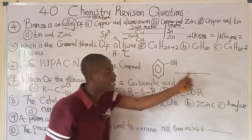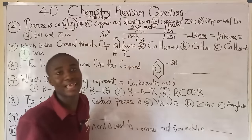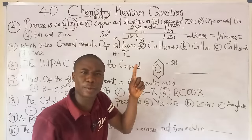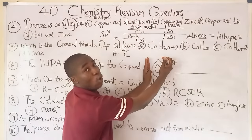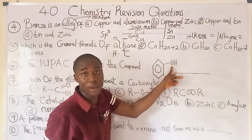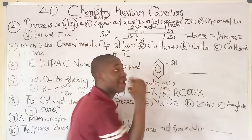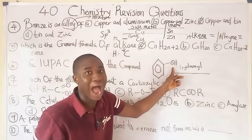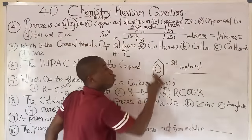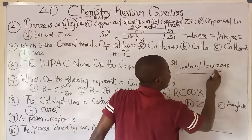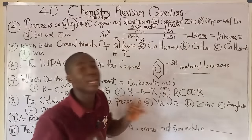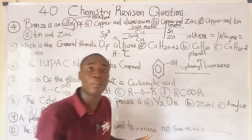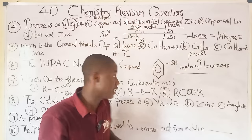Question six: the IUPAC name of the compound shown. Removing the OH group, the base compound is benzene. The OH is the hydroxyl functional group. Since we have hydroxy attached to benzene, the IUPAC name is hydroxybenzene. The common name of this compound is phenol, and it is used as a disinfectant.